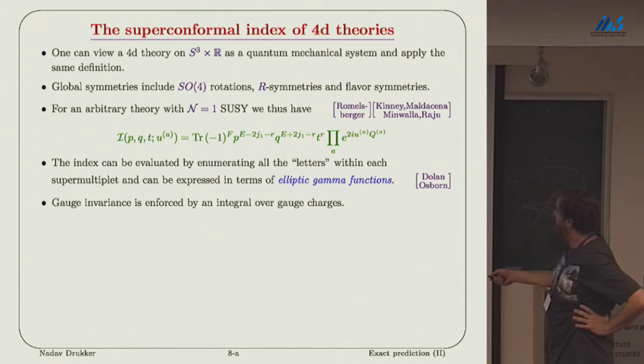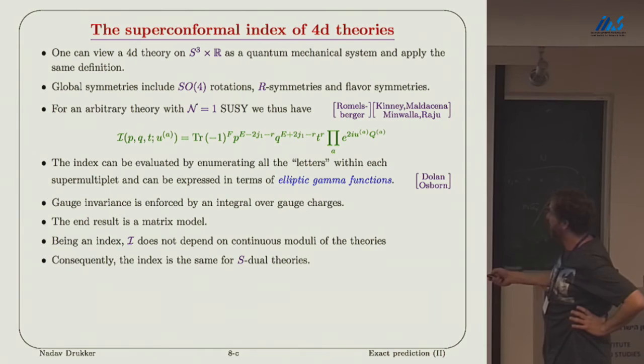An extra ingredient is that we need to enforce gauge invariance. We need to integrate over some parameters, which are the holonomies. We end up with an integral over these elliptic gamma functions. This gives us a matrix model. Being an index, an important fact is that it does not depend on the coupling. We don't have here any dependence on coupling, just on the fugacities.